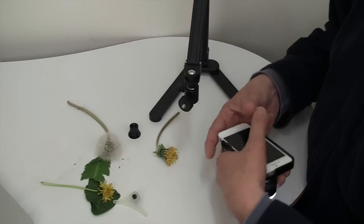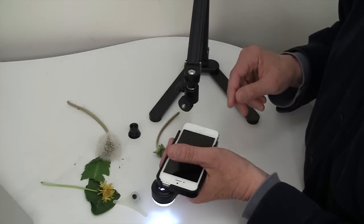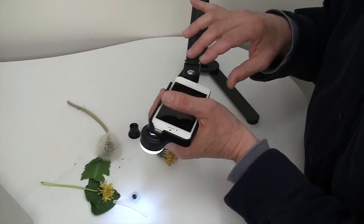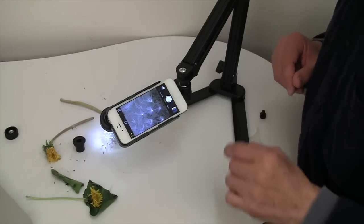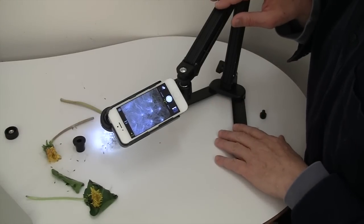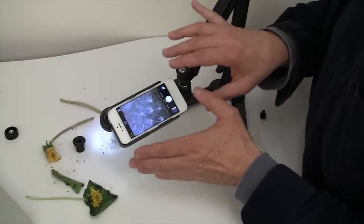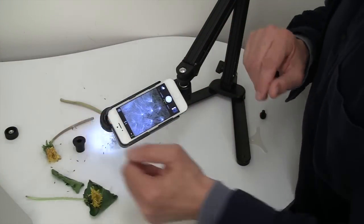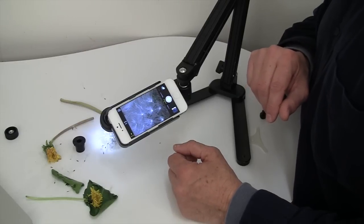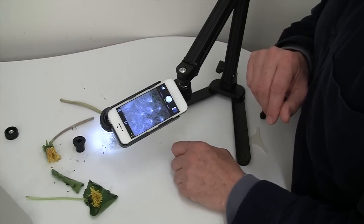Using our ProScope stand, I'm going to attach this, and we'll use this as a flexible viewing station at a distance. So here I am with the ProScope stand, attached to our ProScope Micromobile, using the direct LED lights right onto this dandelion.